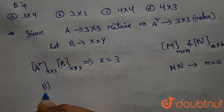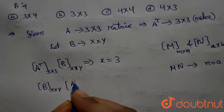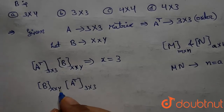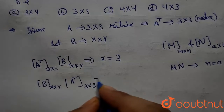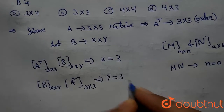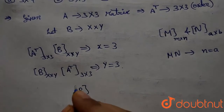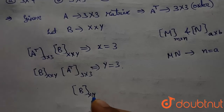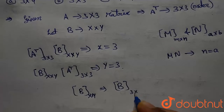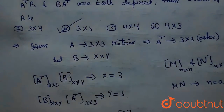B is a matrix of order X×Y and A transpose is a matrix of order 3×3. If we want to multiply these two, this means Y and 3 must be equal, so Y equals 3. Therefore, the order of B is X×Y, which implies B is of order 3×3. That means option B is the correct answer for this question.